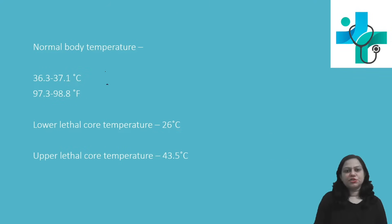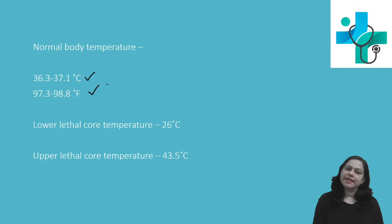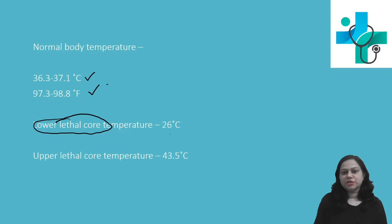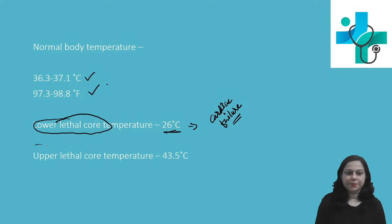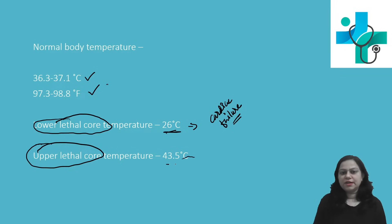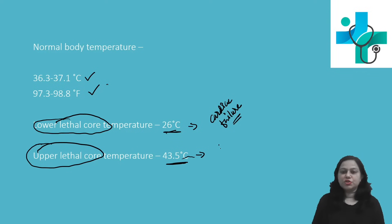Normal body temperature is 36.3 to 37.1 degree Celsius or 97.3 to 98.8 degree Fahrenheit. Lethal core temperature: the lower lethal core temperature is 26 degrees Celsius, which leads to death due to cardiac failure. The upper lethal core temperature is approximately 43.5 degree Celsius, which can cause death due to heat stroke.